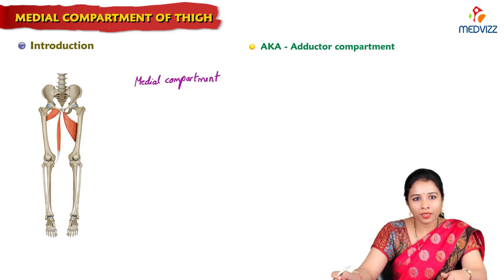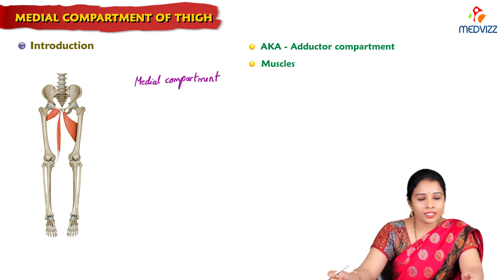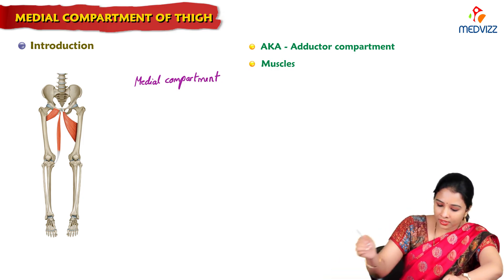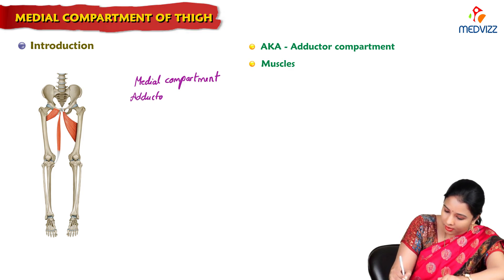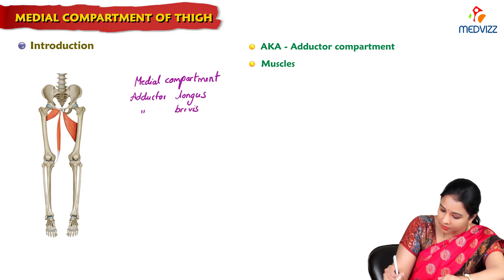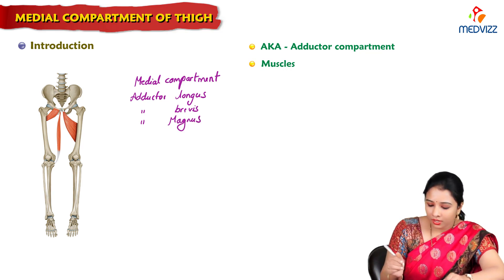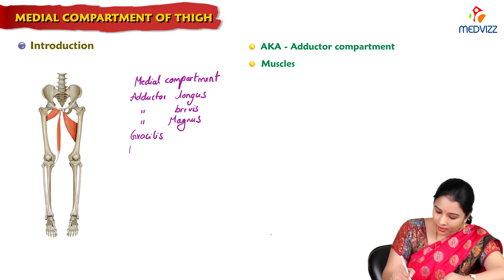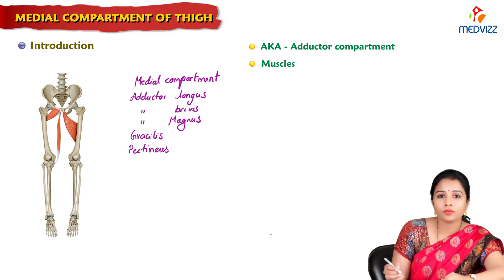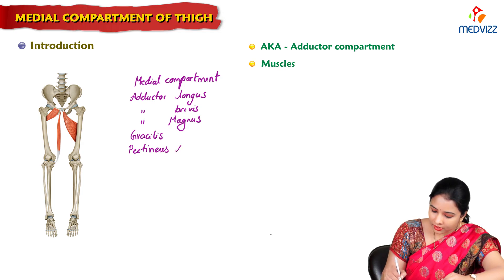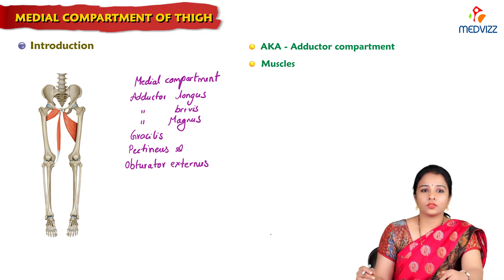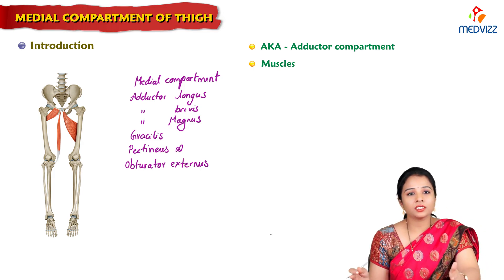The adductor compartment has got muscles like adductor longus, adductor brevis, adductor magnus — all adductor muscles are there — along with gracilis, pectineus, and obturator externus. These are the muscles which are present in the adductor compartment.